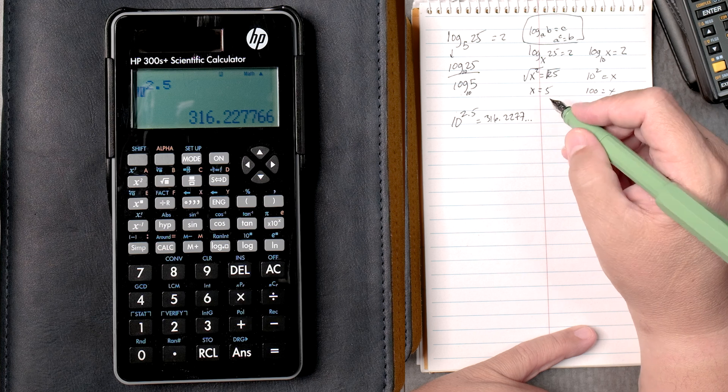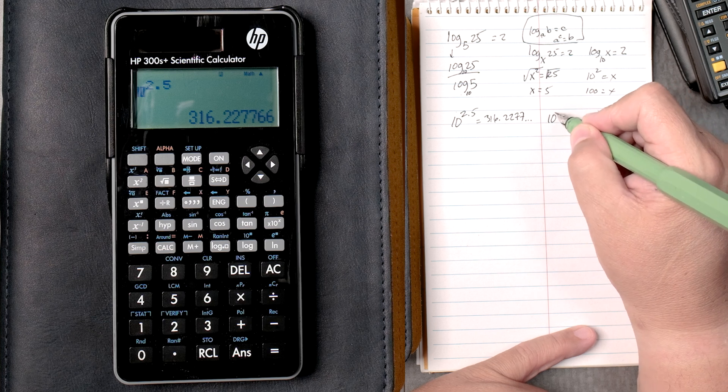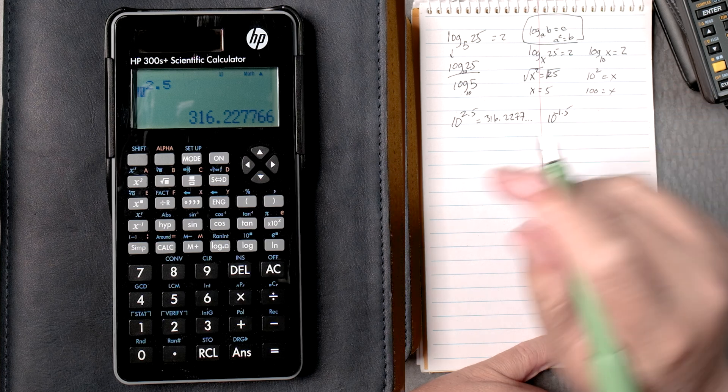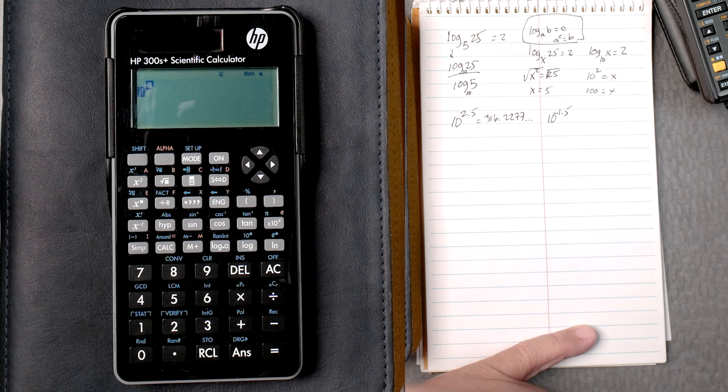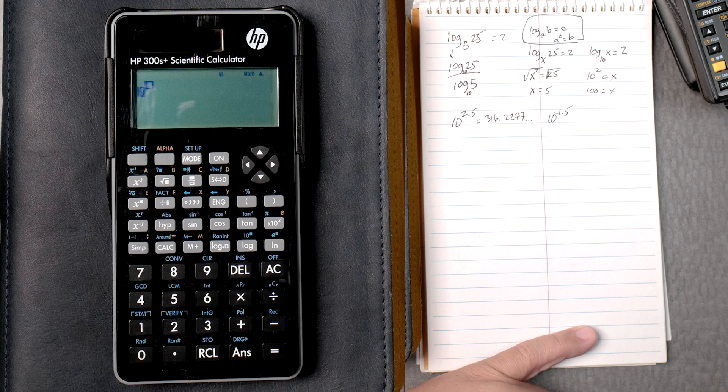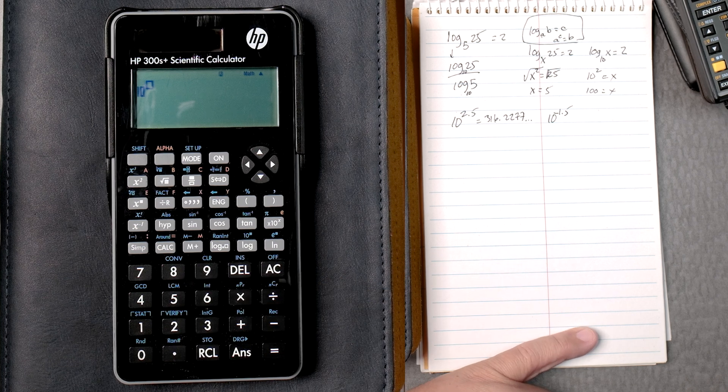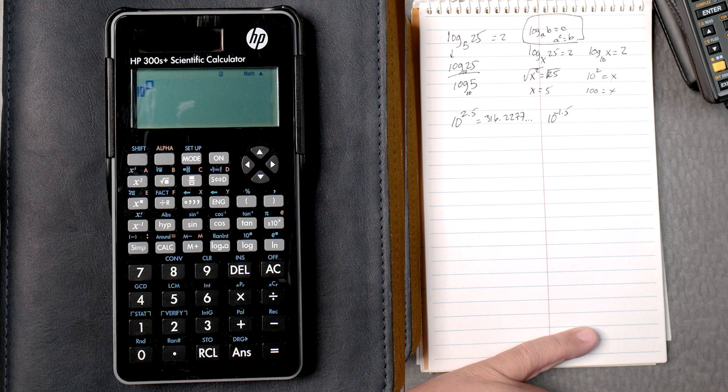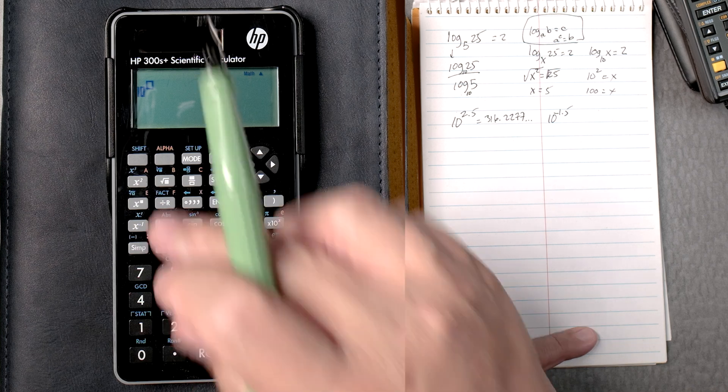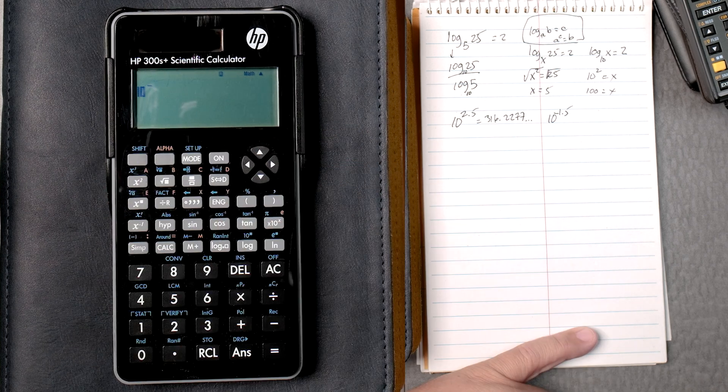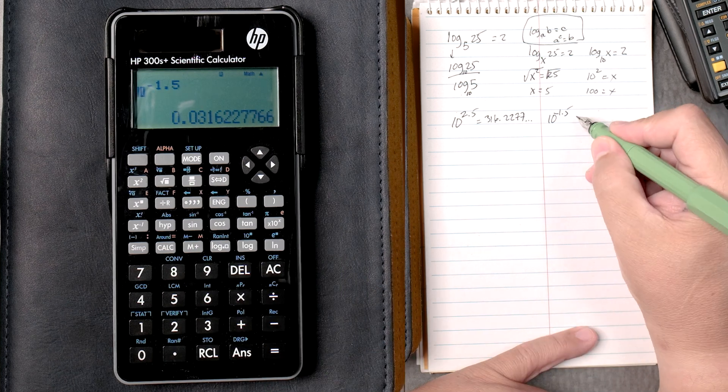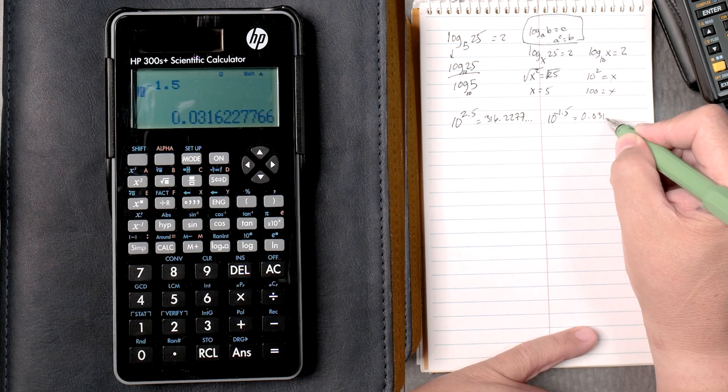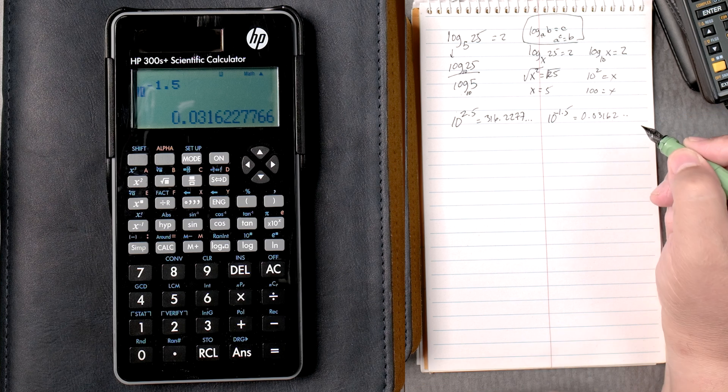Let's move on, 10 to the negative 1.5. So shift, log key, then we're going to go with the plus or minus key, which I'm trying to find here. Shift plus or minus 1.5 equals, and that gives you 0.03162, and so forth.